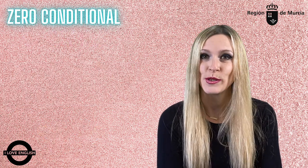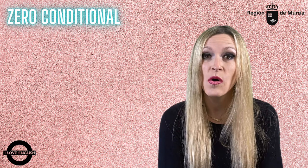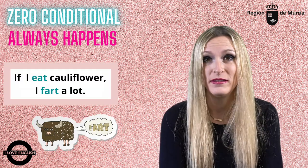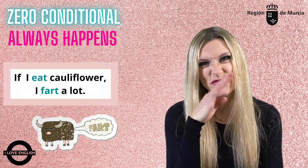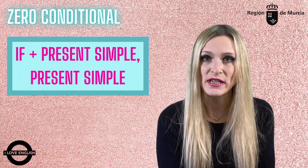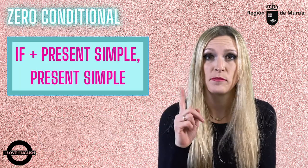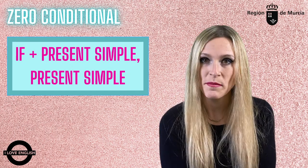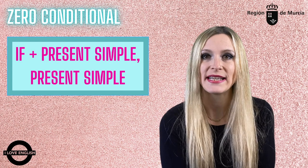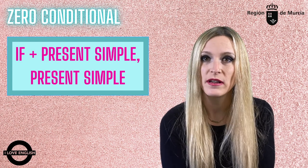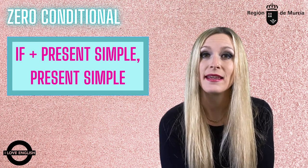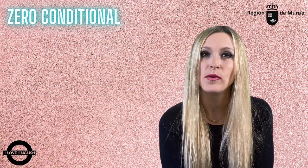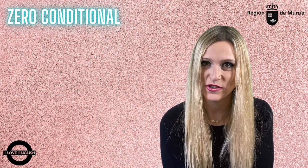Or to talk about something that always happens, like: if I eat cauliflower, I fart a lot. As you see, the structure is: if + present simple, then present simple. Just remember that you can always change the order of the clauses and say the if-clause in the second place, like: water boils if you heat it to 100 degrees.